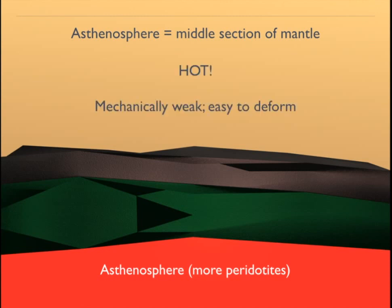The asthenosphere is really, really hot. And that heat, that temperature, makes it mechanically weak compared to the lithosphere. So whereas the lithosphere is very rigid and very hard to deform, the asthenosphere is fairly easy to deform. And in fact, under pressure, it can actually flow over time, despite being solid.